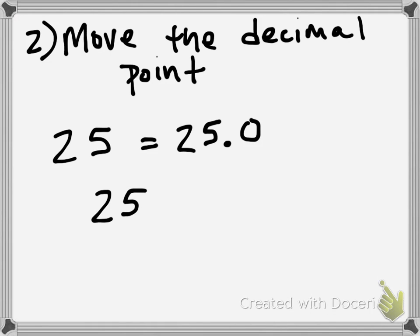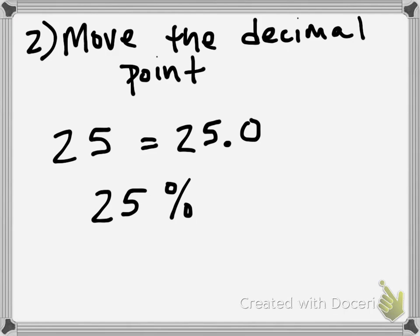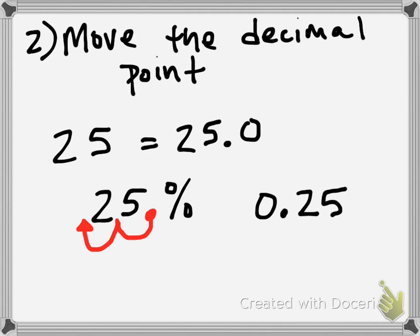So when I see a percent like 25%, there is not a decimal point shown, but it's understood that that's where the decimal point would be. To move from a percent to a decimal, we have to move that decimal point — even though we don't really see it, we know it's there — two places to the left. So with 25%, I move it one spot to the left, then two spots to the left. If I rewrite that number with the decimal point moved two spots to the left, it would be twenty-five hundredths — the same number we got when we wrote it as a fraction.